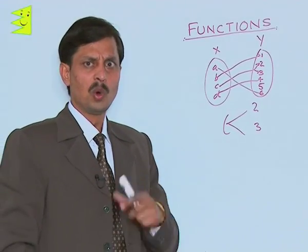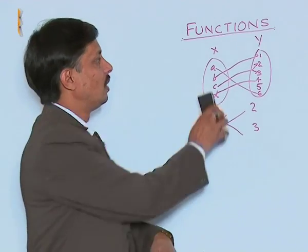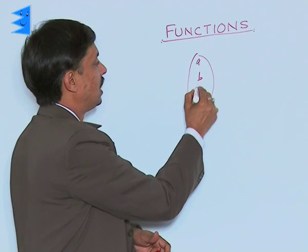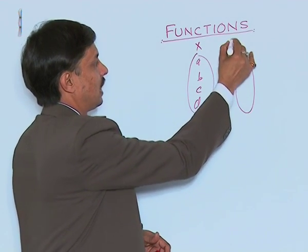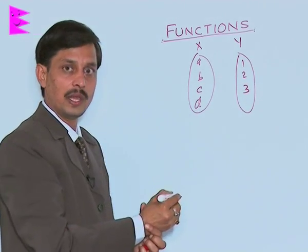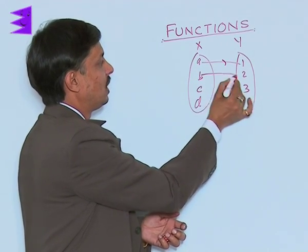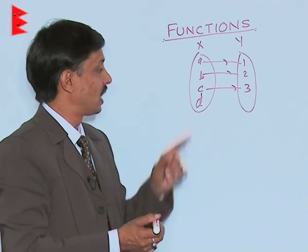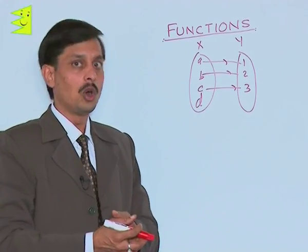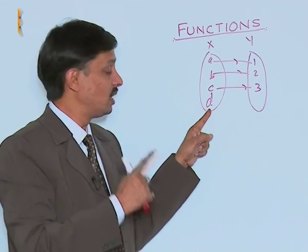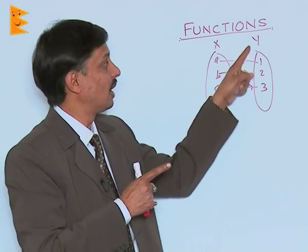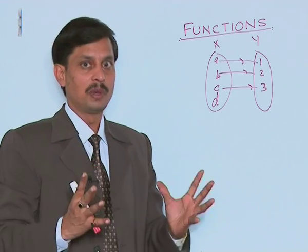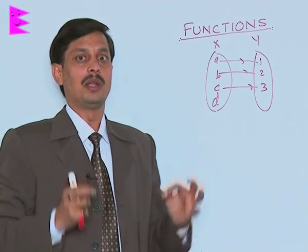One more situation: suppose set X has elements A, B, C, D and set Y has elements 1, 2, 3. A is associated with 1, B with 2, C with 3, but there is no association for D. This also does not follow the definition of a function because D, an element of the first set, is not associated with any element in the second set. For a function, there must be two non-empty sets such that every element of the first set is uniquely associated with some element in the second set.